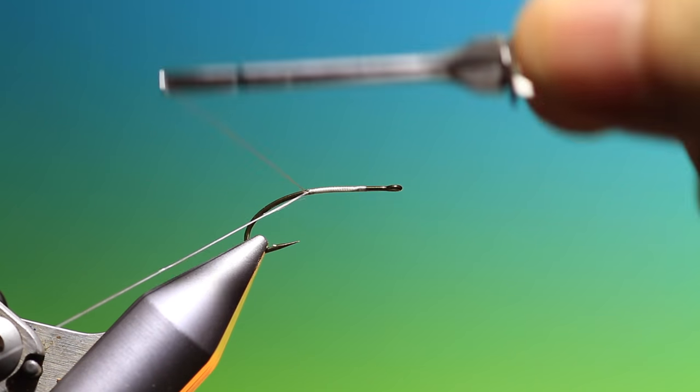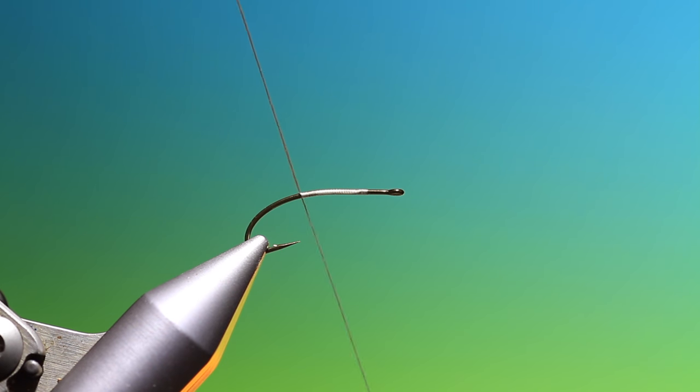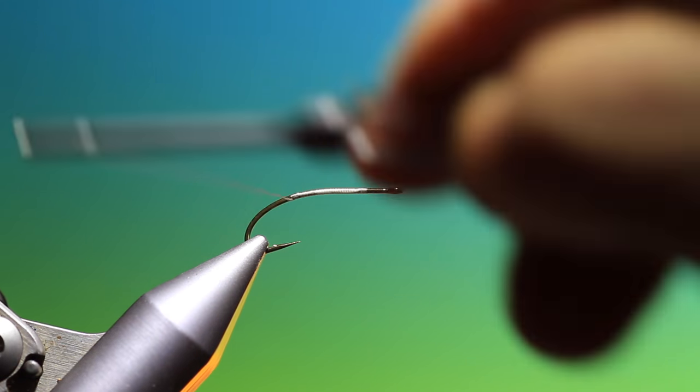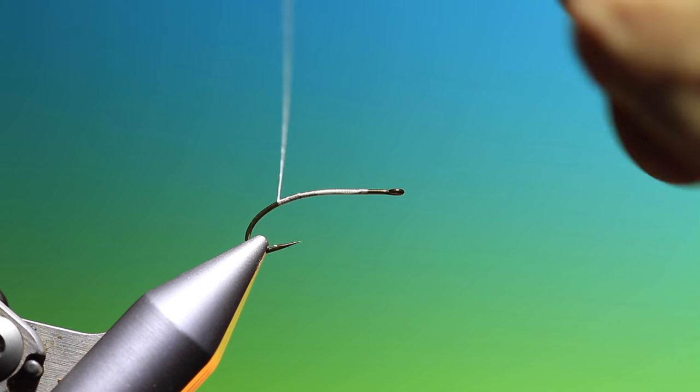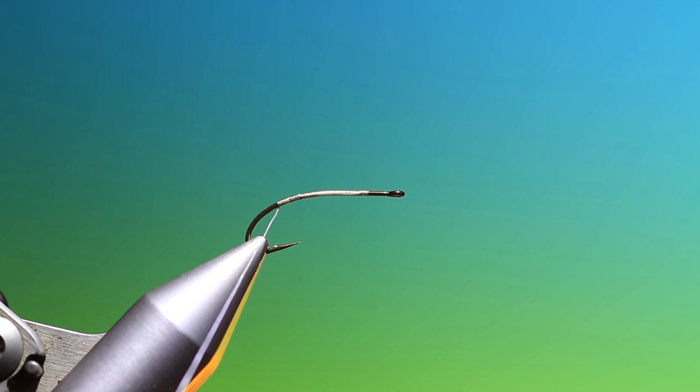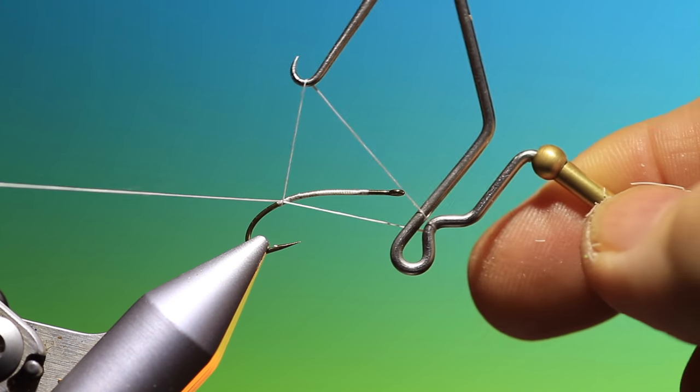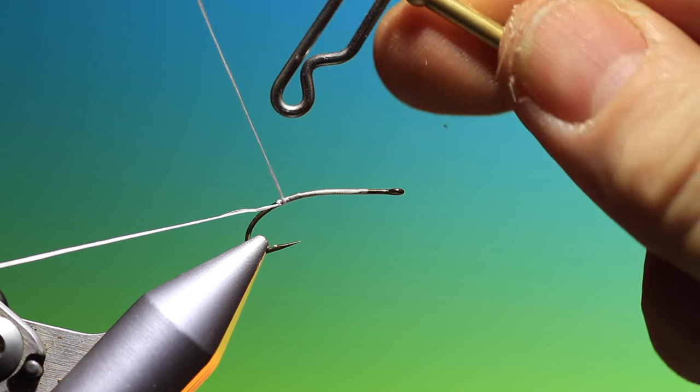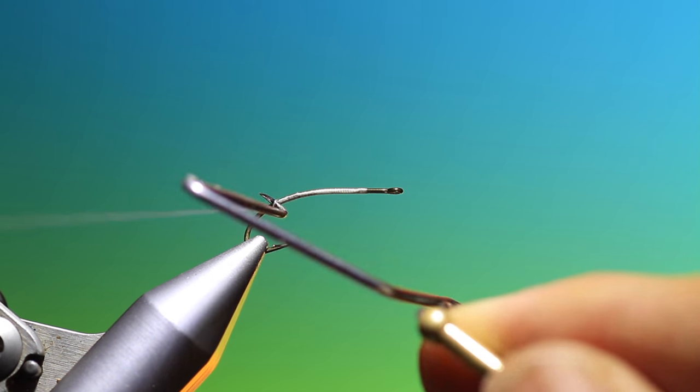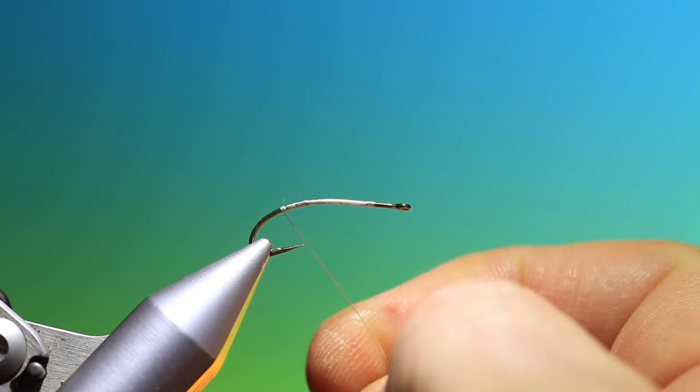So we just attach a little tying thread, remove that and go back a little to about there. Now what I like to do is make a whip finish back there. This will put an anchor on the deer hair.